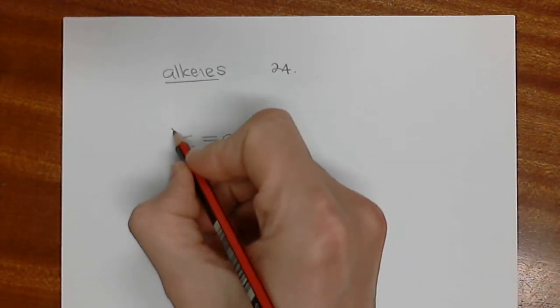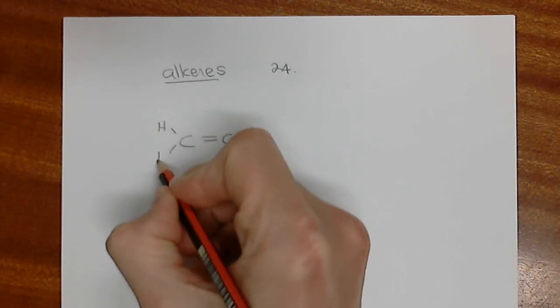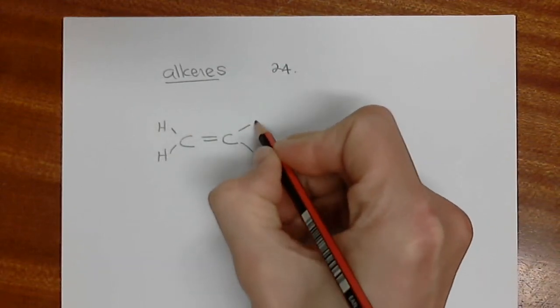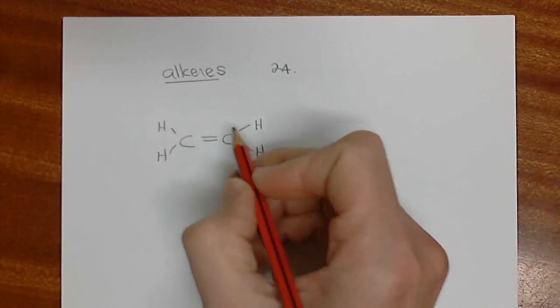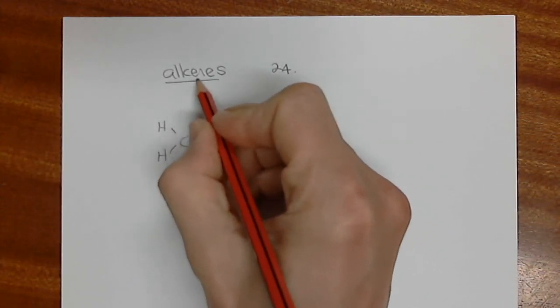It might seem quite simple and innocuous when I draw out a very simple molecule like this. This is just a two-carbon molecule with a double bond. And alkenes, this ending bit, ene,